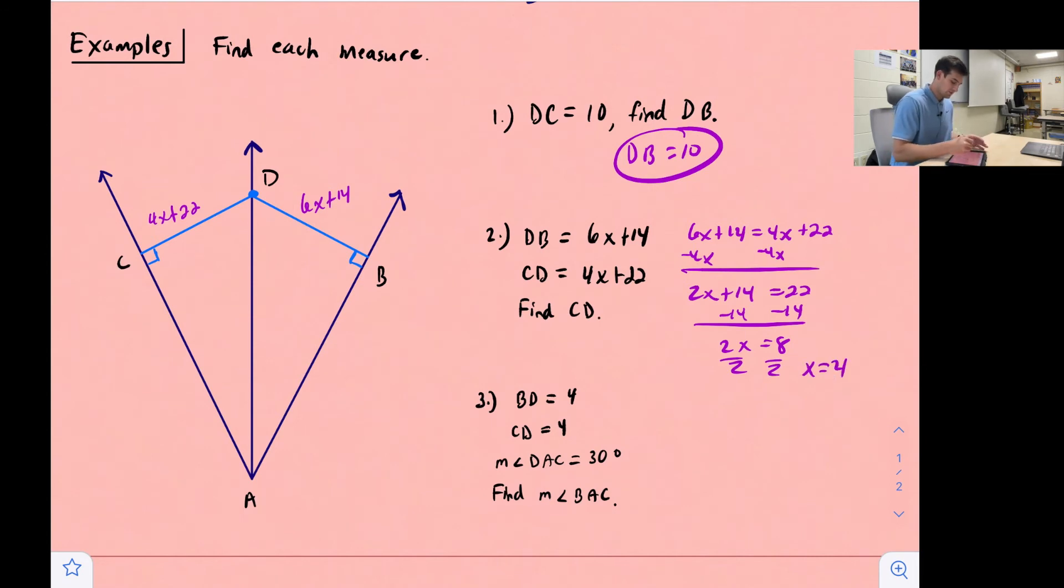So now let's take, for example, CD, let's take 4 right there. So now we have 4 times 4 plus 22. So 16 plus 22, and we get CD is equal to 38.